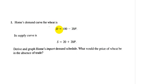Home's demand curve for wheat is given as D equals 100 minus 20P. Its supply curve is given by S equals 20 plus 20P. Now we need to derive the import demand schedule and graph them.